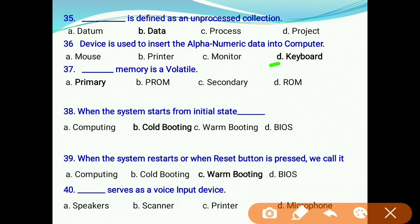The blank memory is volatile: primary or RAM. RAM is not in the option, so the answer is primary memory. When the computer starts from initial state, it is called: a) computing, b) cold booting, c) warm booting, d) BIOS. Initial means it is cold booting. When the computer restarts or when reset button is pressed, we call it computing, cold booting, or warm booting. It is warm booting. It is given reset, so the answer is warm booting. Last question: Blank serves as the voice input device. Options: a) speakers, b) scanner, c) printer, d) microphone. The answer is microphone.